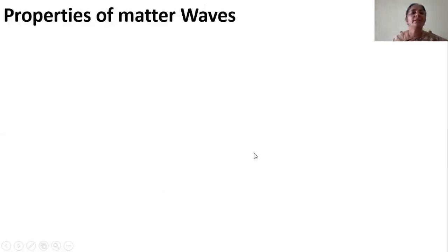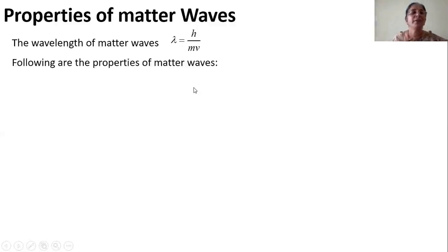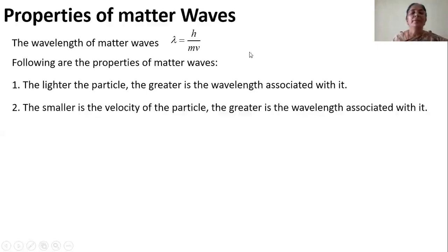Now let us look at the properties of matter waves. The matter wave wavelength lambda is given by h by mv. From this we can predict many properties. h is Planck's constant, and from this formula we can say lambda is inversely proportional to mass. So the first property: when the particle is lighter, the wavelength associated with the particle will be greater. The lighter the particle, the greater is the wavelength associated with it.